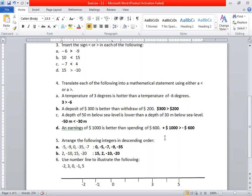A deposit of $300 is better than a withdrawal of $200, so the answer is $300 greater than $200. You can put a minus sign for withdrawal since you are taking money, so it could be $300 greater than minus $200.